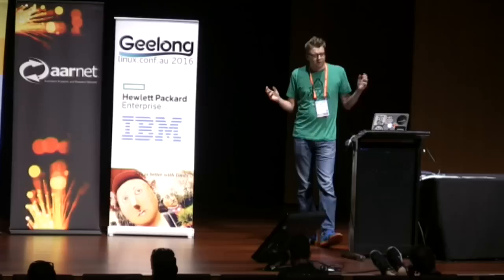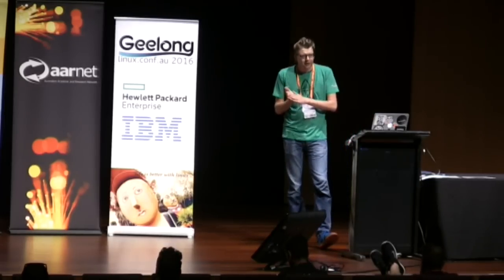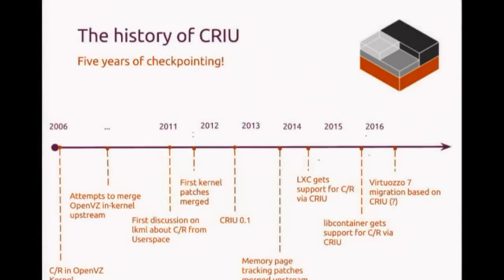In 2014, LXC got support for checkpoint restore via CRIU and there was a demo with Doom being live-migrated. In 2015, libcontainer got support and there was a demo with Quake being migrated. This year Virtuozzo 7, the modern version of OpenVZ, is working hard toward making CRIU the live migration engine — and hopefully they'll do a Half-Life demo.